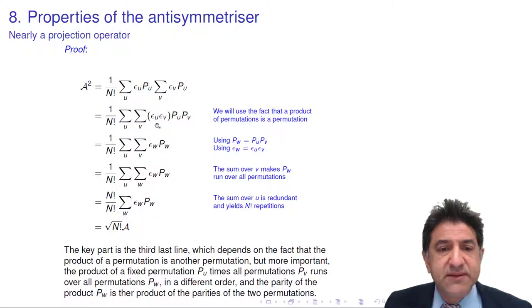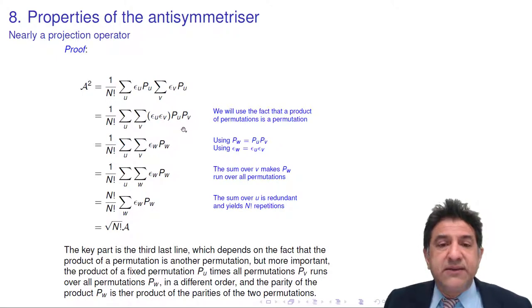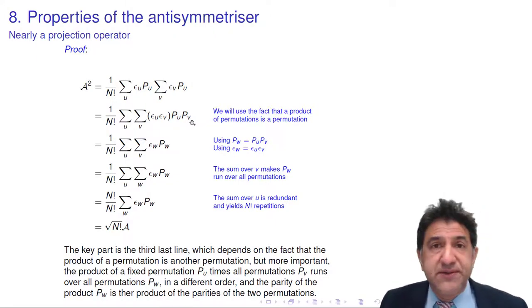pw is equal to pu times pv. Now, pv is summing over all possible permutations. And in front of that, we're permuting all of those again by one permutation, pu. It turns out that if you do one permutation over a set of all permutations, you will end up with, again, the set of all permutations.